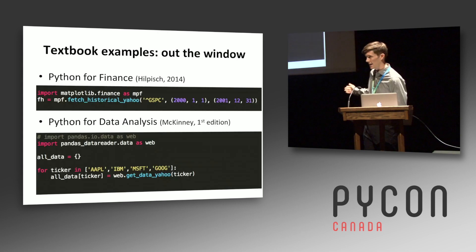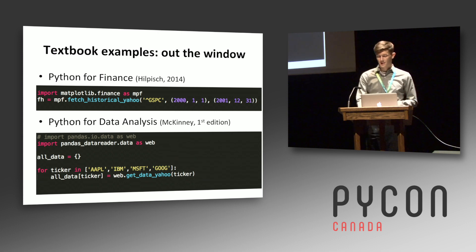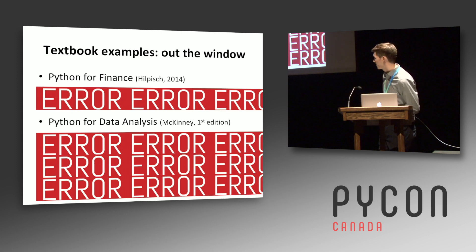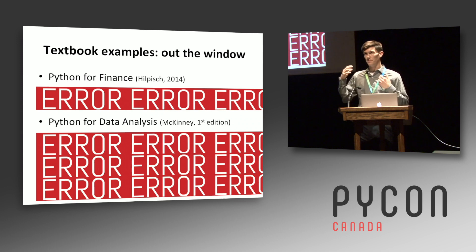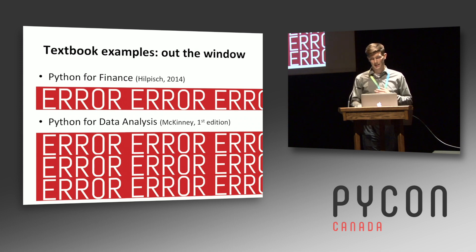A lot of those libraries, including the ones I just showed you, experienced an immediate loss of functionality. So all these nice textbook examples — if you were working through these textbooks in May of this year — you would have found that the basis of the examples just started throwing a bunch of errors, which is not really good. People such as myself, who had code built on top of these libraries and running automatically, found that things just started breaking.